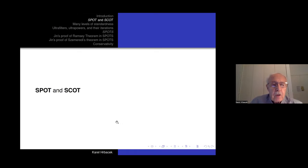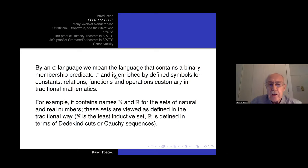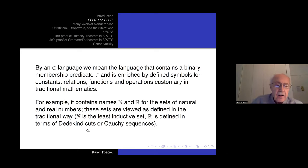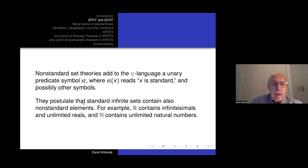Let me state the axioms of these theories. When I say epsilon language, I mean the language containing the epsilon predicate of set theory, enriched by defined symbols for constants, relations, functions, and so on. The epsilon language has a name N for the set of natural numbers and a name R for the set of real numbers — N is the least inductive set, R is defined by Cauchy sequences or Dedekind cuts.